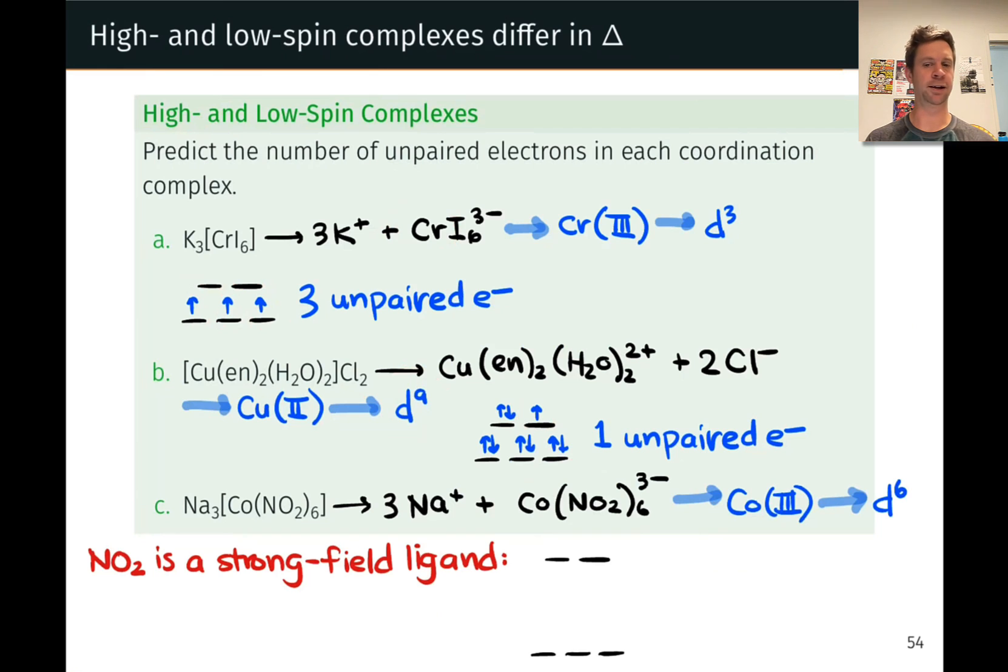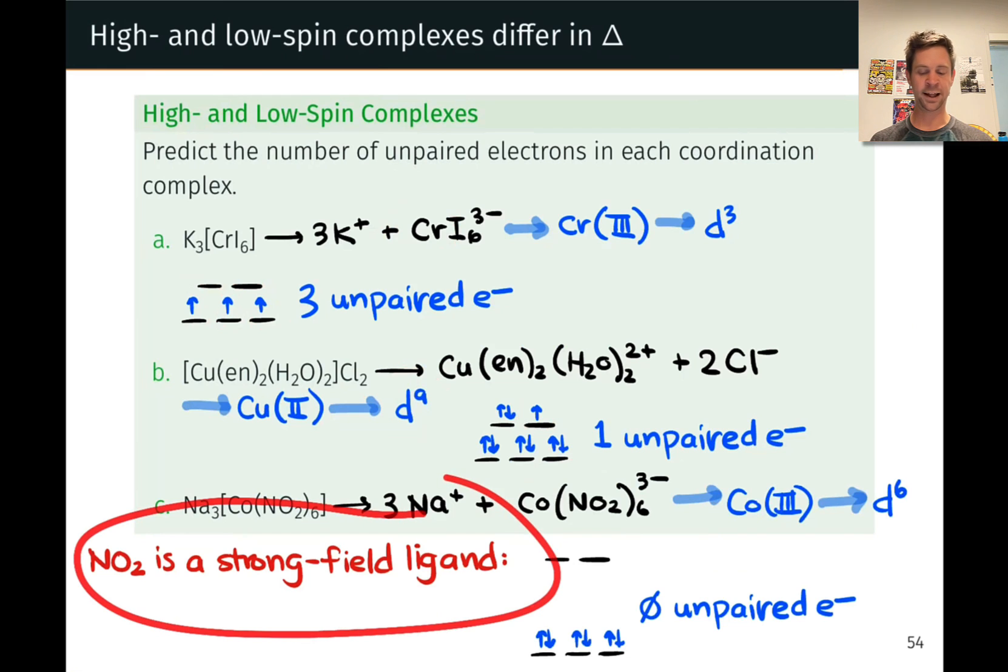Now, NO2 is pretty reliably a strong field ligand, so I've deliberately drawn a large gap between the lower energy and higher energy levels in the octahedral splitting here. And how are we going to fill electrons? Well, we're going to pair as soon as we get the chance based on Hund's rule. So we start by adding three into the t2g orbitals, and we're going to continue to pair electrons because the pairing energy is less than the crystal field splitting for this strong field ligand. So we end up with an orbital energy diagram that looks like this. No unpaired electrons at all.